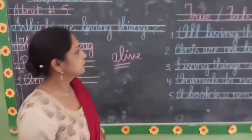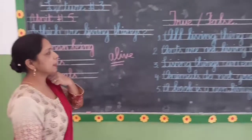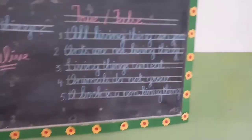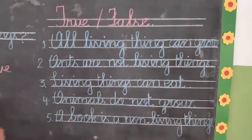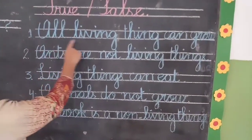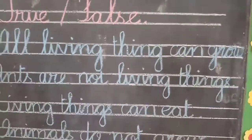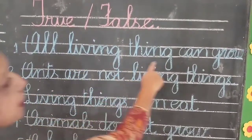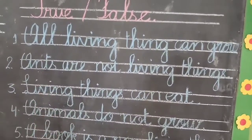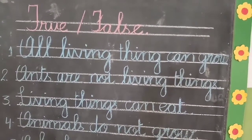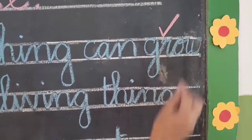Dear students, ab iske saath hum thode kuch questions true/false karenge, taaki hamara concept aur mazeed clear ho jaye. True and false. Number one: all living things can grow. Is this true or false? Yes, it's true. You can write: it's true.